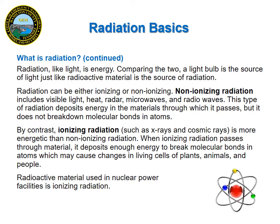When dealing with radiation, it is important to understand that radiation can be ionizing and non-ionizing. Non-ionizing radiation is not typically an issue, as it does not break down the molecular bonds in an atom as it passes through objects. On the other hand, ionizing radiation, such as x-rays, is more energetic and when it passes through an object it will break down those molecular bonds, causing changes in any living cells. This is important to remember because the radioactive material used in nuclear plants, such as ours here in Hamilton County, is ionizing radiation.